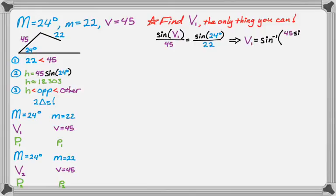So here I need to solve for V1. So V1 is the inverse sine, or the arc sine, of 45 sine of 24 over 22. Grab a calculator, punch it in. I get my answer to three decimal places, and I'm going to fill it in the information. And so that's V1 in triangle 1.